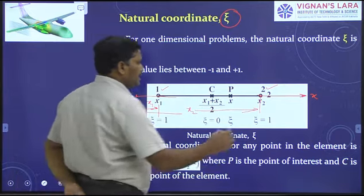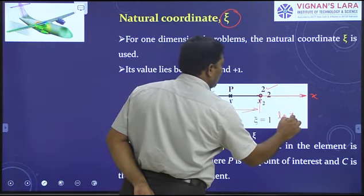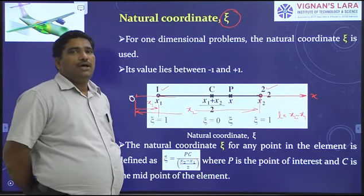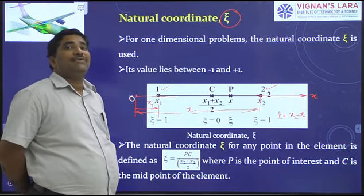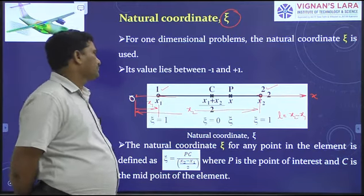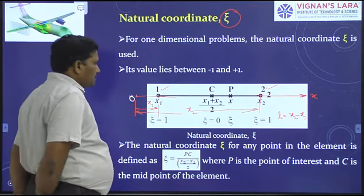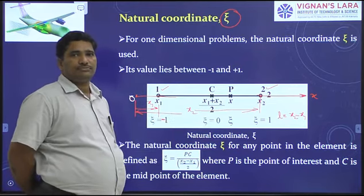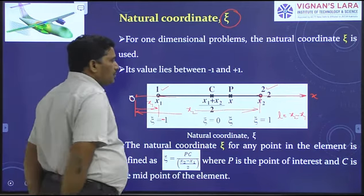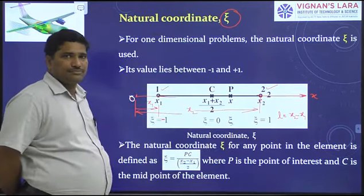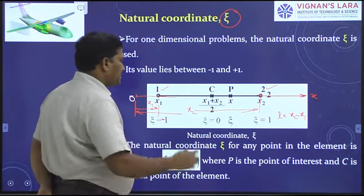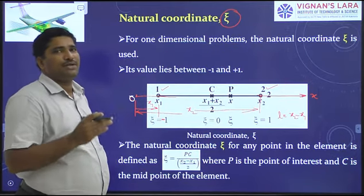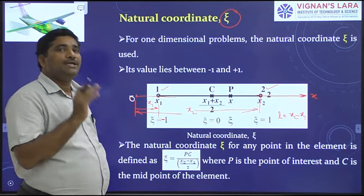The length of the element is covered as ξ varies from minus one to plus one. Therefore, at node one, ξ equals minus one. At node two, ξ equals plus one. At the midpoint of the element, ξ equals zero, because the length of the element is covered as ξ varies from minus one to plus one.